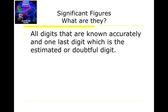We'll answer the question: what are they? Then we're going to talk about some examples of how we determine how many significant digits a number has. And finally, we'll conclude with doing some examples of calculations — addition and subtraction, and multiplication and division — and how we determine how many significant digits our final answer will have.